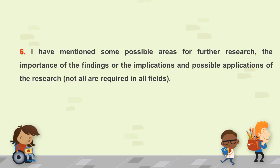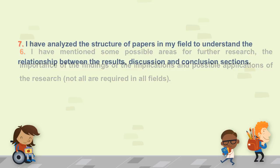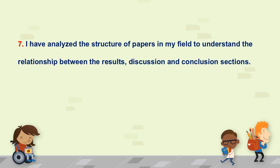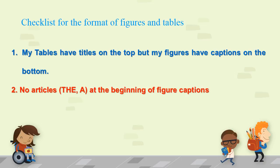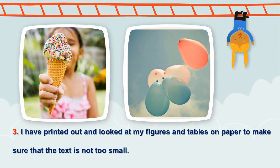Four: I have identified and clearly explained the importance of the findings for the field as a whole. Five: I have mentioned whether my results support or differ from previous research in the field. If they differ, I have attempted to explain why. Six: I have mentioned some possible areas for further research, the importance of the findings, or the implications and possible applications of the research — not all are required in all fields.